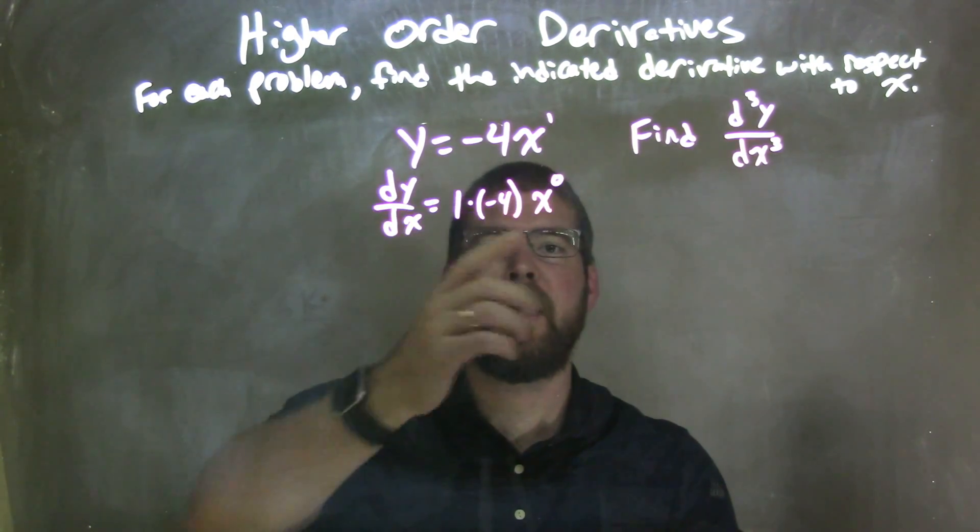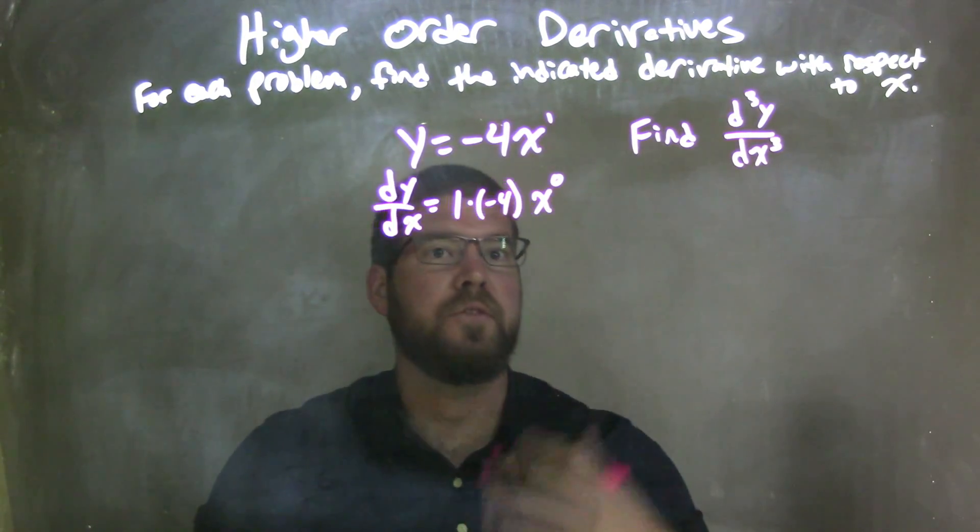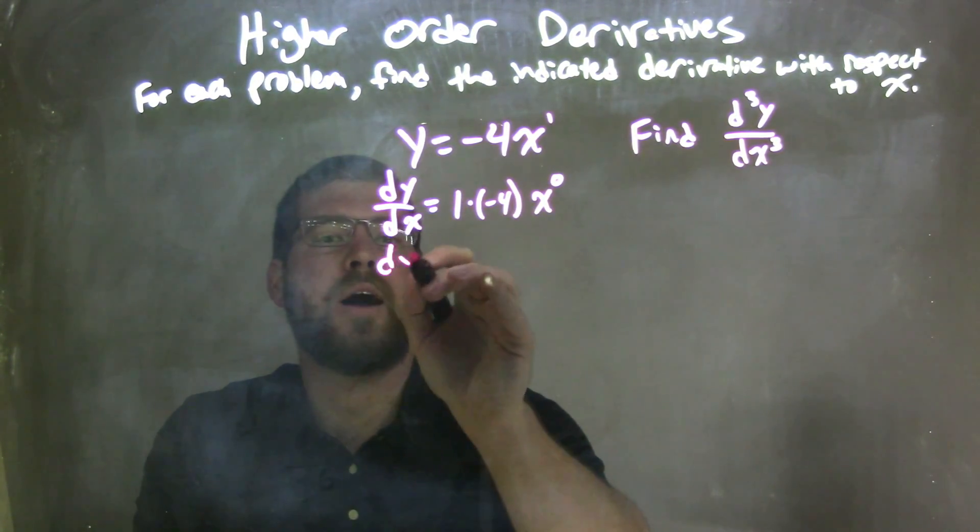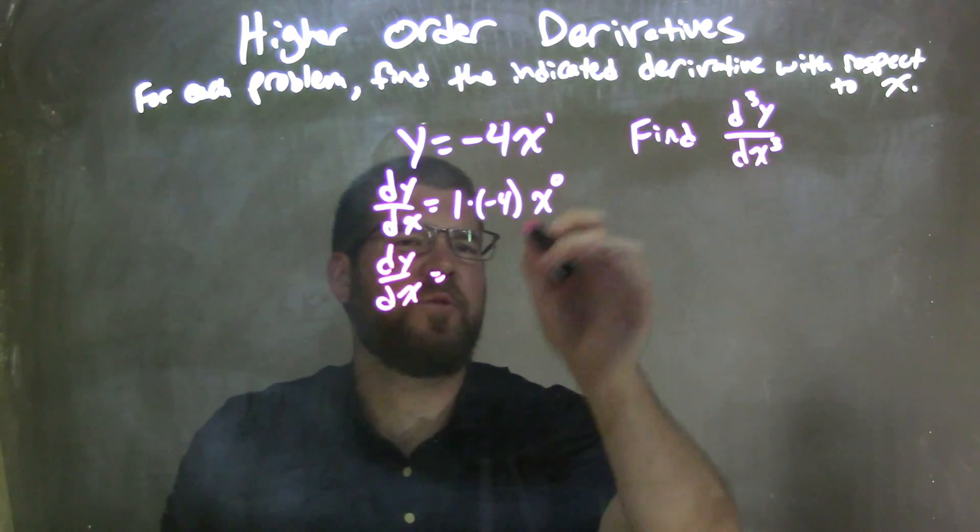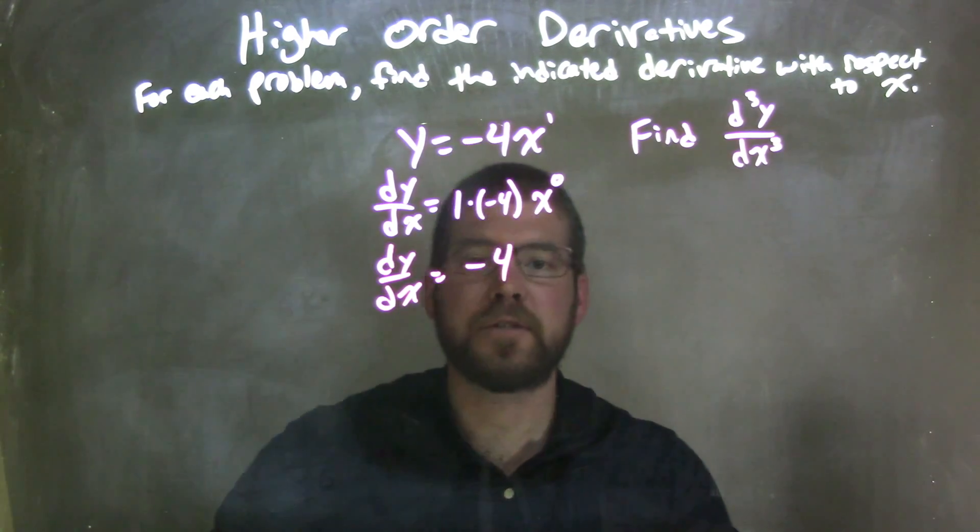Let's simplify that. x to the 0 power is just 1. So we have dy/dx is equal to 1 times negative 4 times 1, which is just negative 4. And so that is our first derivative.